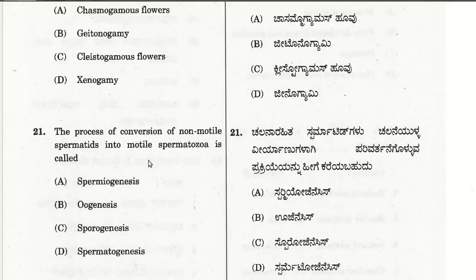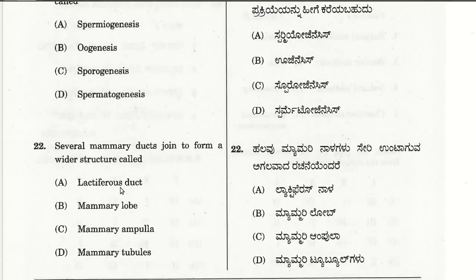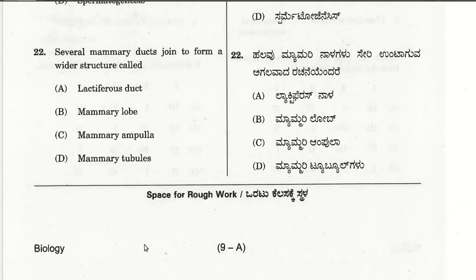The twenty-first question: the process of conversion of non-motile spermatids into motile spermatozoa is called spermiogenesis. The first choice is the answer. The twenty-second question: several mammary ducts join to form a wider structure called the mammary ampulla.